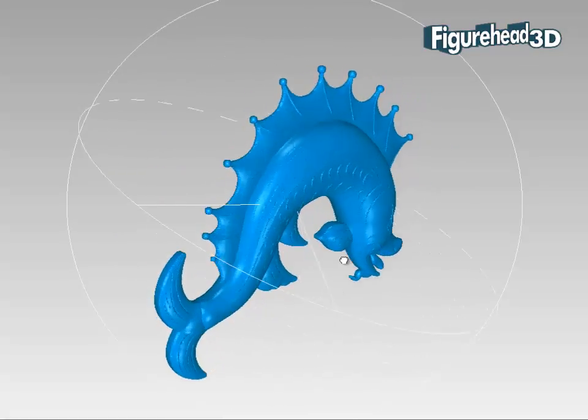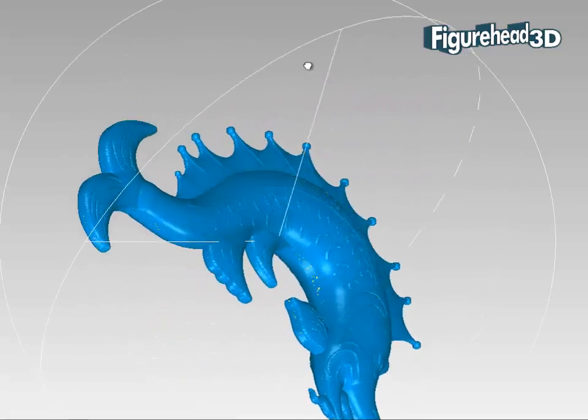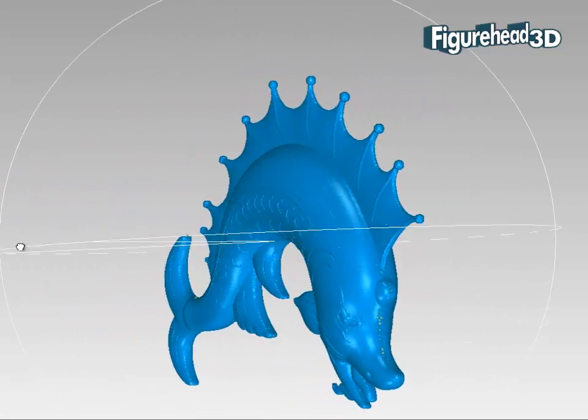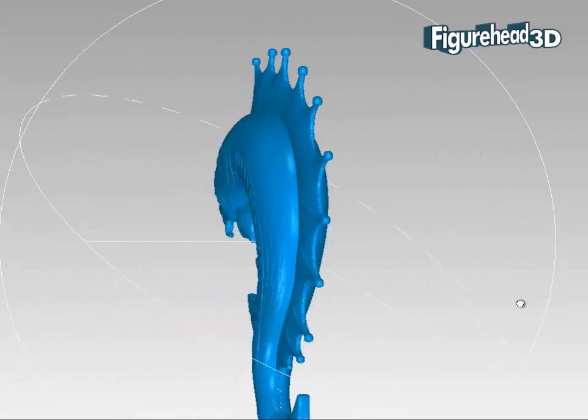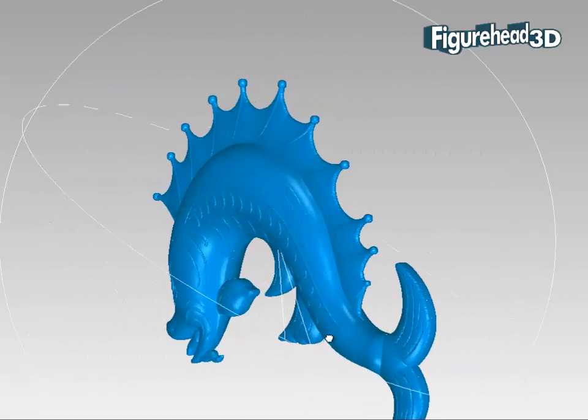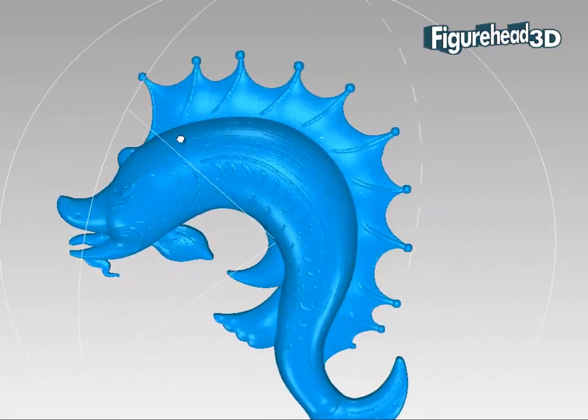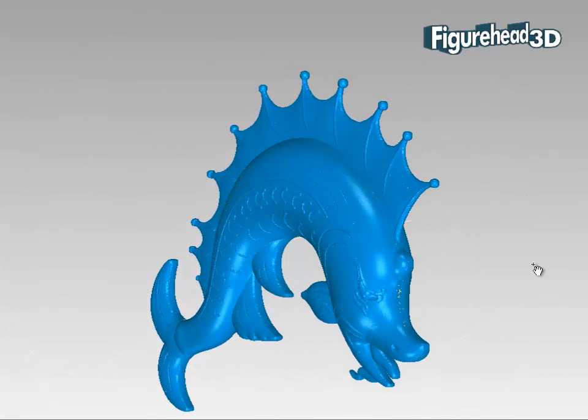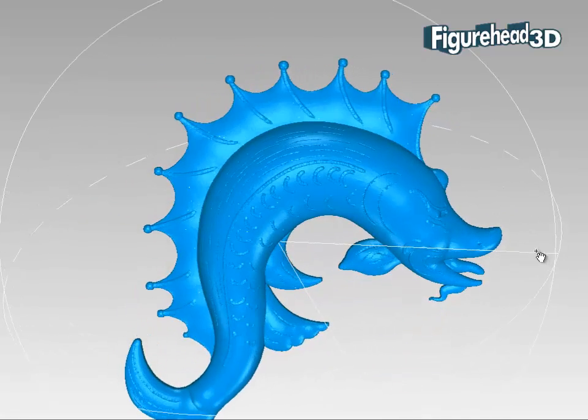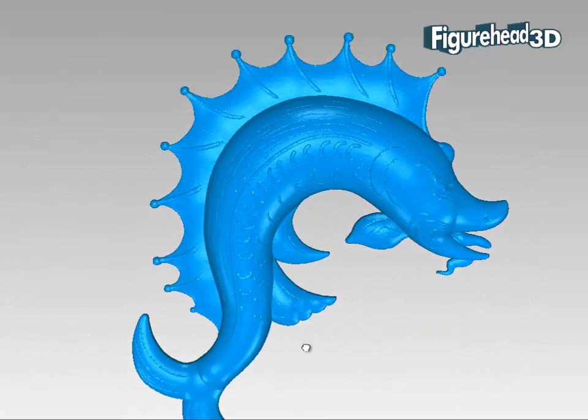If we turn it around for viewing you can see the results are excellent. Now from this digital computer model we can process the digital data for manufacturing the dolphin using 3D printing technology or more conventional production equipment. Indeed we can just as easily produce a mould for casting numerous dolphins.